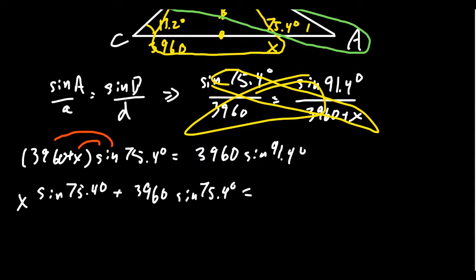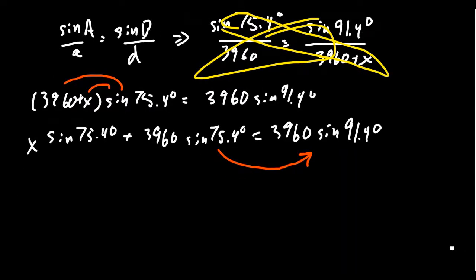So we're going to cross multiply here to solve for X. So we end up with 3,960 plus X times that by sine of 75.4 degrees. This equals 3,960 sine of 91.4 degrees. We need to solve for X. So we're going to distribute sine of 75.4 throughout on the left-hand side. This gives us X times sine of 75.4 degrees, then plus 3960 times sine of 75.4 degrees.